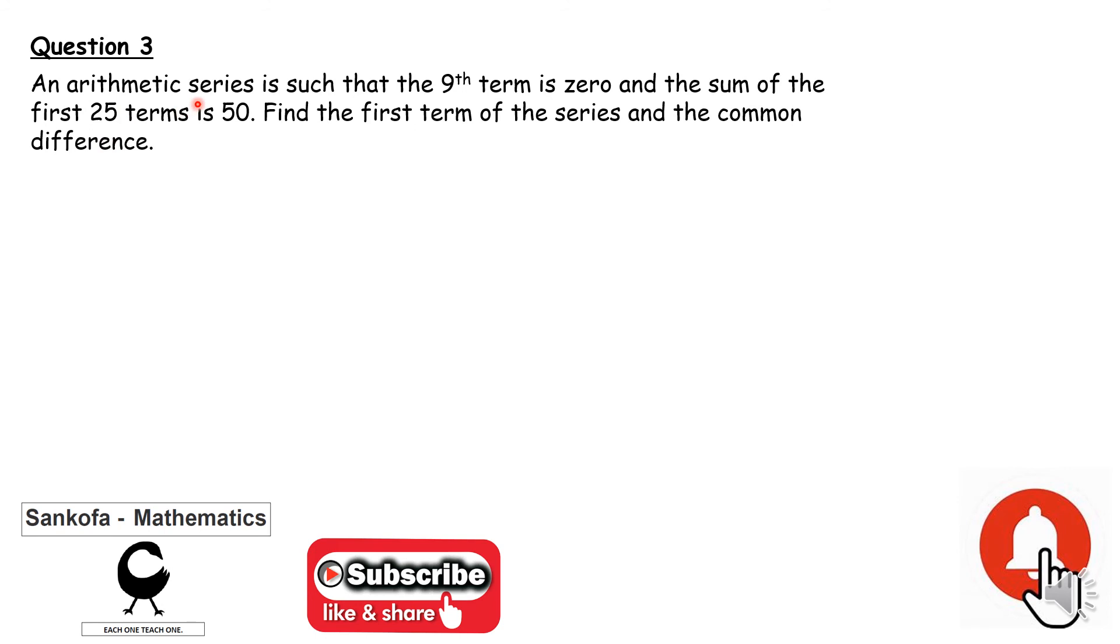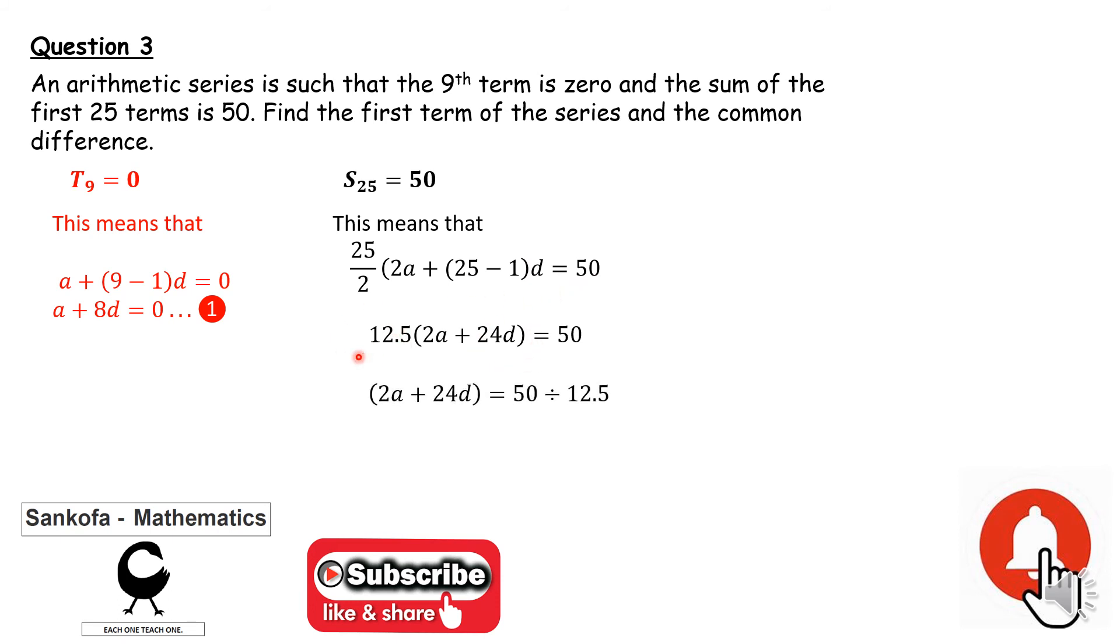Question 3. You have an AP or arithmetic series such that the 9th term is 0 and the sum of the first 25 terms is 50. Find the first term of the series and the common difference. Some sort of simultaneous equation. Using T sub n, I can get an equation a plus 8d equals 0. Using S sub n, I get 25 over 2 times 2a plus 24d equals 50. When I clean this up, I eventually end up with an equation a plus 12d equals 2.